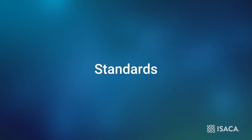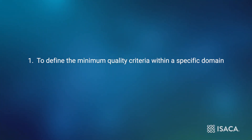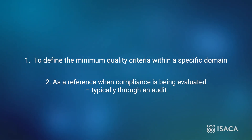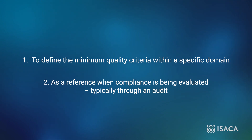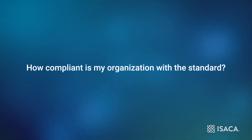Next, let's look at the standards. These define the criteria for quality that are pertinent to a specific domain as the work is being carried out. Standards — with ISO standards being amongst the world's most commonly used ones — are used in two ways within the compliance layer: to define the minimum quality criteria within a specific domain, and as a reference when compliance is being evaluated, typically through an audit. Standards and audits attempt to answer: how repeatable is the quality as my organization carries out the work, and how compliant is my organization with the standard?